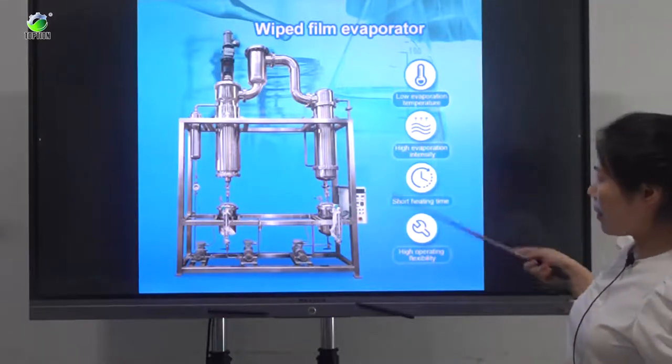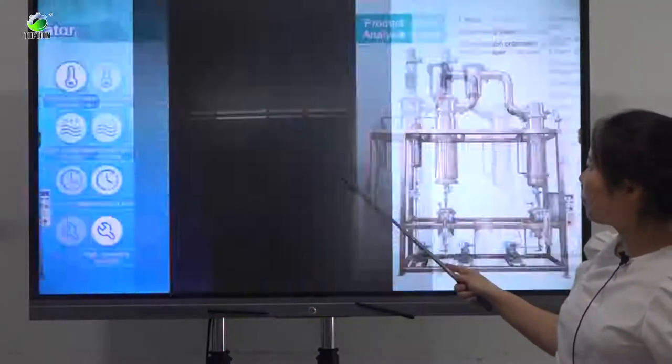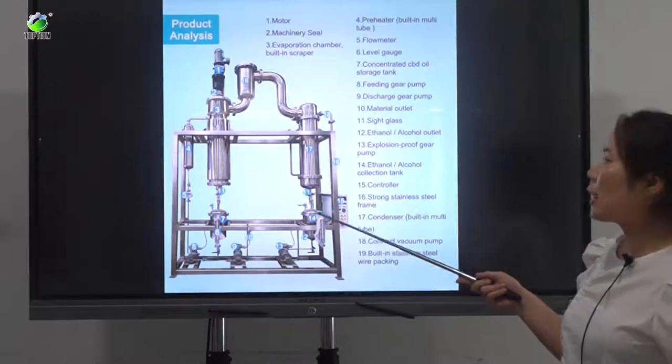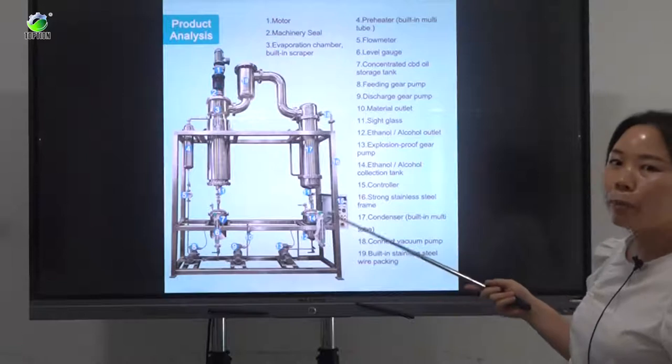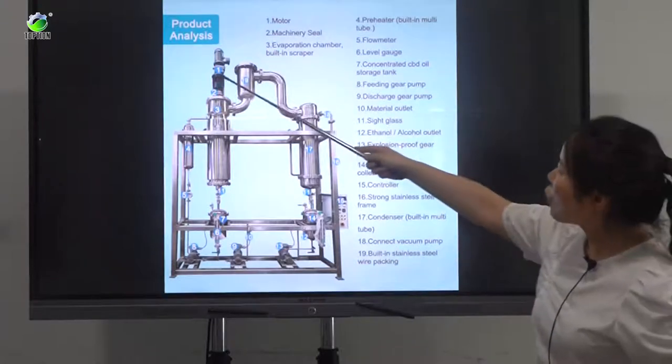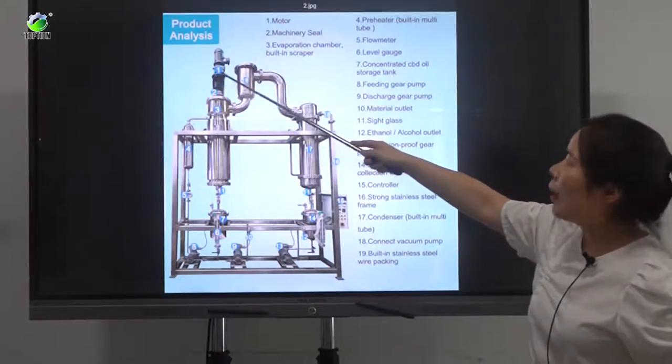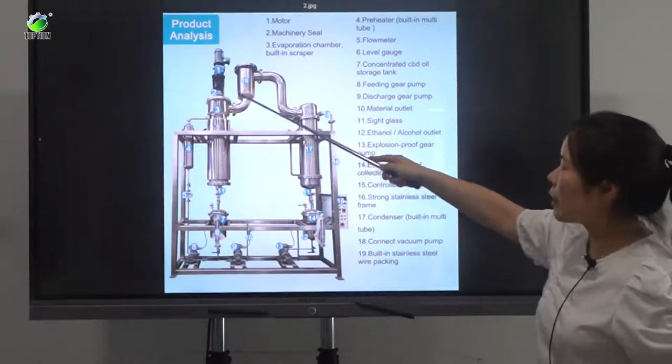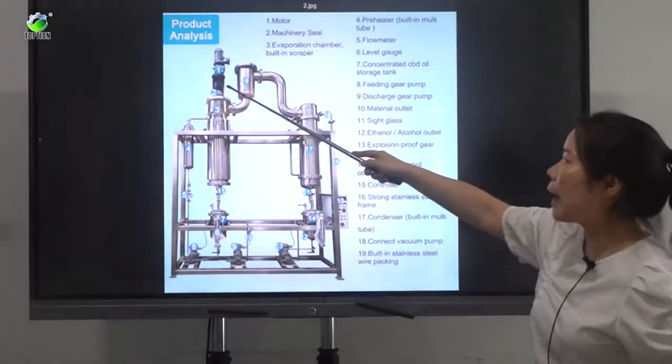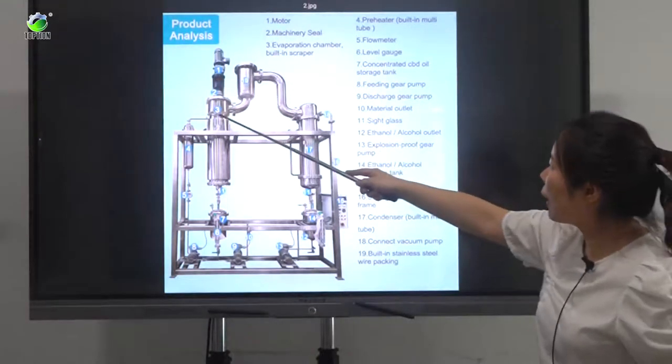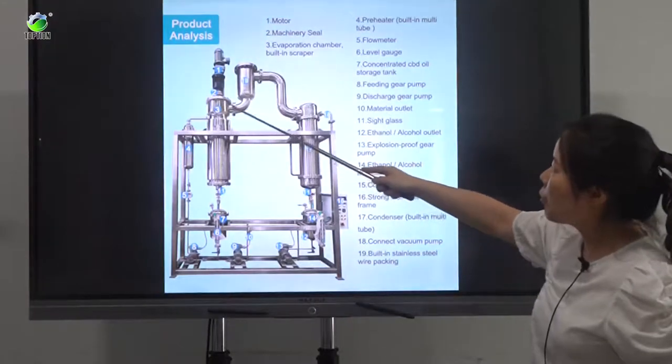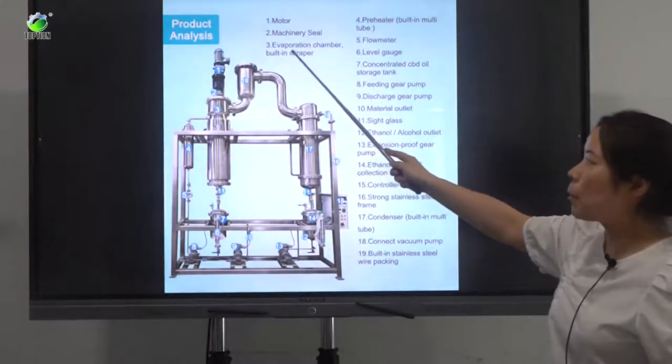This is the structure. Here we can see the structure of this wiped film evaporator. The first one is the motor, and second is machinery seal here. This is machinery seal with high vacuum. The third one here is evaporation chamber with a built-in scraper.